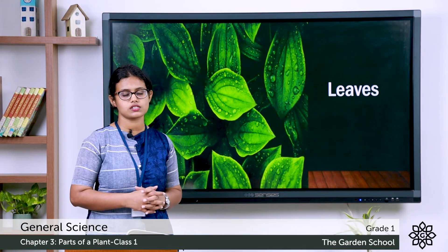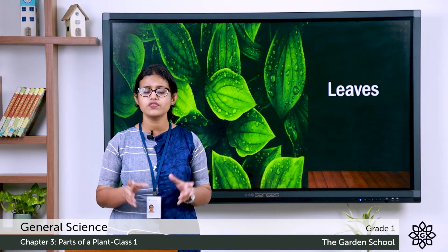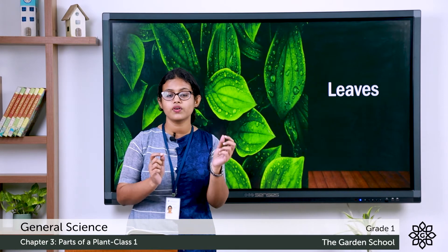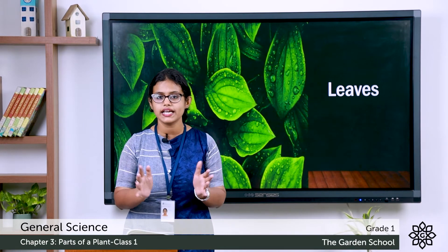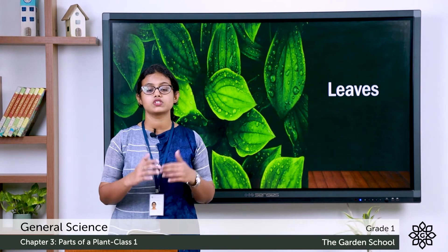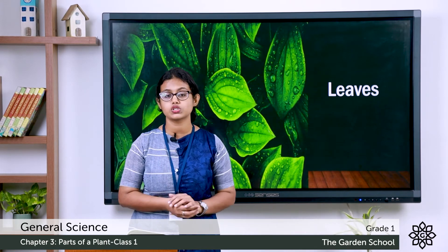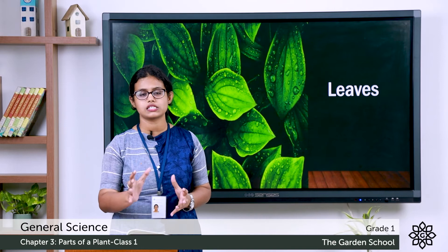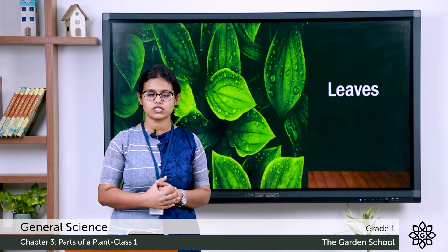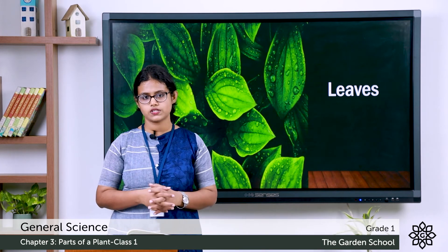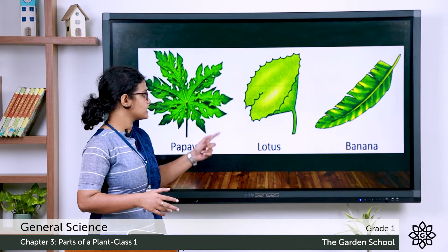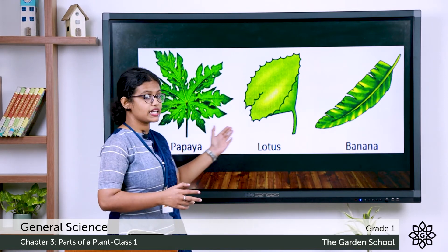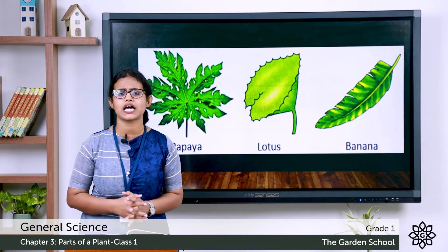Next is the leaves. A plant has many leaves and most plants have green leaves. Plants have different types of leaves — the leaf of a mango plant and the leaf of a rose plant do not look the same. Different leaves have different size and shape. Plants make food on the leaves, and that process is called photosynthesis. Here you can see pictures of the leaf of a papaya, lotus and banana — they all look different.